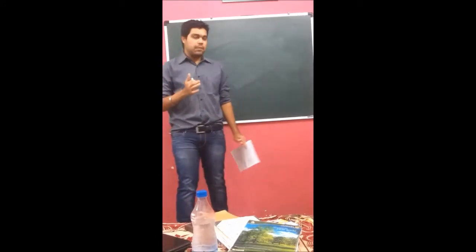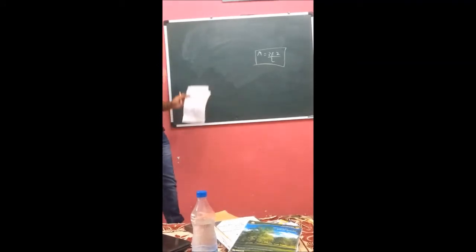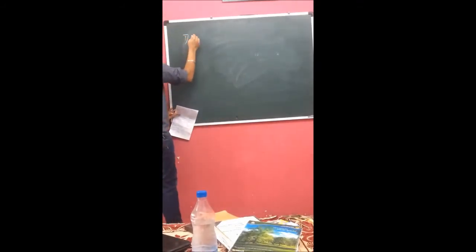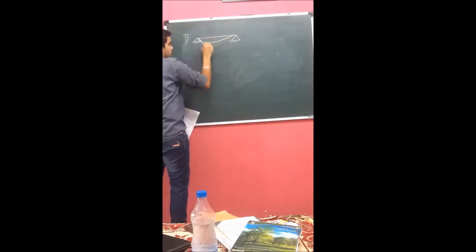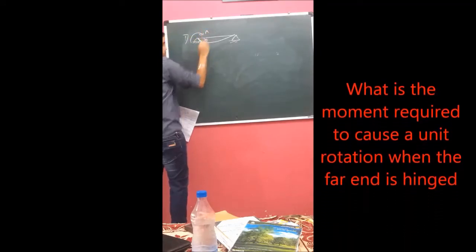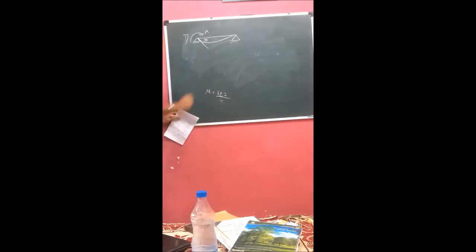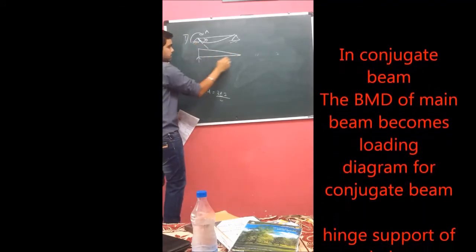Before we start with the stiffness matrix, it is important to know some formulas. We are not going to blindly use these formulas — it is necessary to understand their derivation. The very first case: if it is a hinge at the far end and I want a unit rotation theta at this end, what moment is required? We know M = 3EI/L (where theta = 1). To solve this, we use the conjugate beam method. The BMD for this loading is well known, and a hinge becomes a hinge in the conjugate beam.